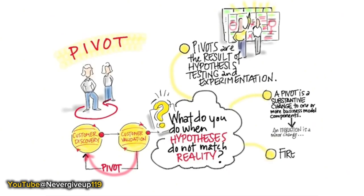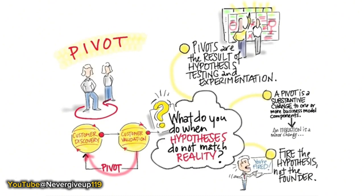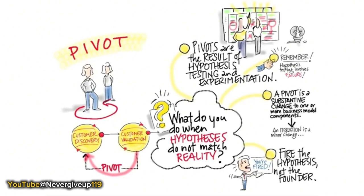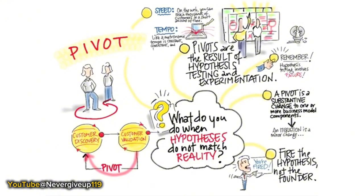A pivot might say: 'This isn't our customer segment - our customer segment is really here,' or 'our revenue model shouldn't be freemium, we should be charging from day one,' or 'we've been using the wrong distribution channel, we need a direct sales force,' or 'we have the wrong partners.' An iteration, by contrast, is a minor change - for example, going from $9.99 to $6.99. A pivot is substantive, like going from freemium to subscription. The key idea is that a pivot allows you to get out and make changes - typically only founders can do pivots. And you want to keep them at a constant speed and tempo, with your entire company operating like a metronome: constant, consistent, and relentless.